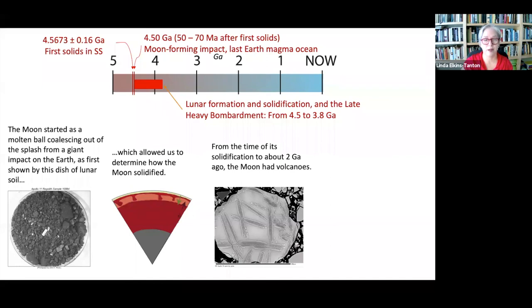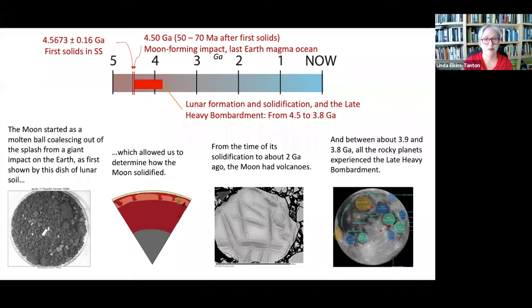From the time of its formation to perhaps two billion years ago, the moon had volcanoes that put lava flows - basaltic lava flows - and glass beads into its surface. And then also between 3.9 and 3.8, more or less, all the rocky planets experienced the late heavy bombardment - a huge series of impacts thrown at us, we think, from the outer solar system. Thank you so much.